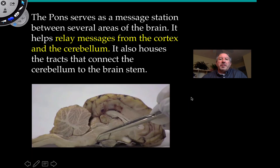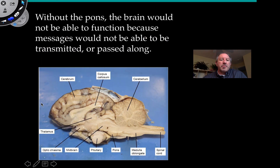The pons is basically a message relay station between several areas of the brain. It relays messages between the cortex, which is up in the cerebrum, and the cerebellum. It also houses tracts that connect the cerebellum to the brain stem. There's a lot of interconnection going on in the pons. In this mid-sagittal cut of the sheep brain, you can see the pons right here — superior to the medulla and inferior to the midbrain — just a small structure, but the brain wouldn't function without it.